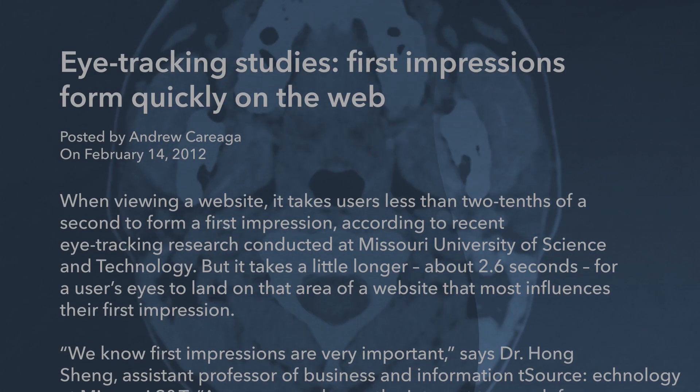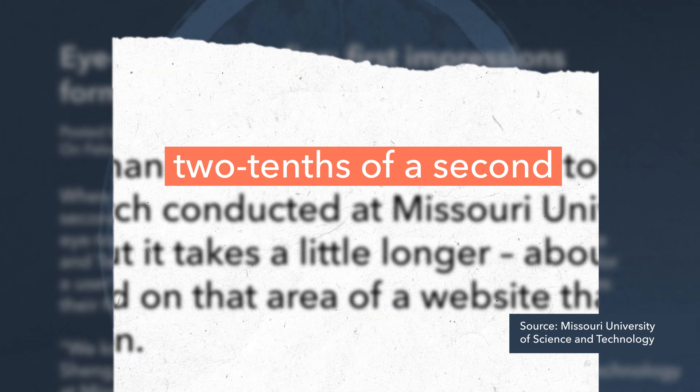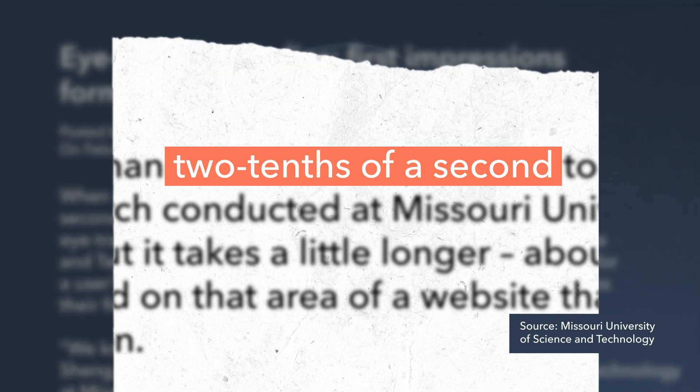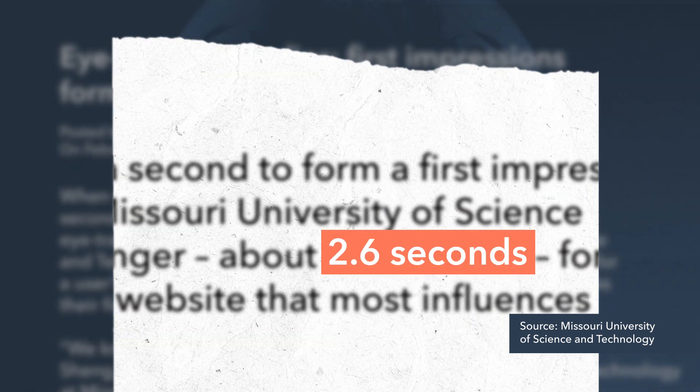You're probably asking yourself why Facebook bothers with the three-second view at all. Research has shown it takes two-tenths of a second to make an impression online, and online features take 2.6 seconds to process. So not only can your brand make a valuable impression in under three seconds, it's enough time for the user's brain to act on that impression — in this case, maybe watch more of your video.